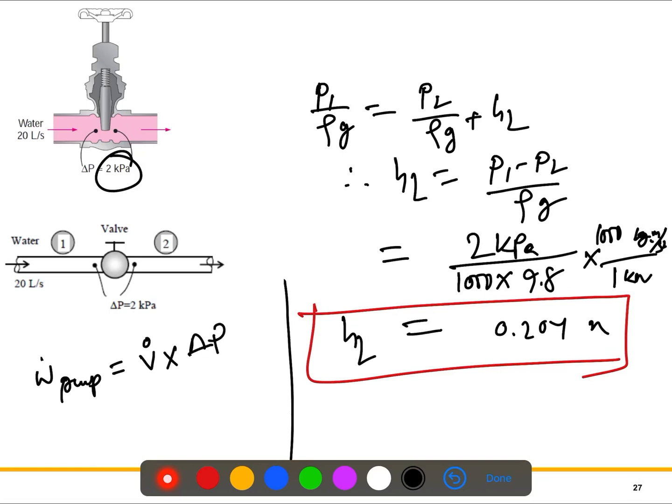The simple formula is the volume flow rate times the pressure difference. The volume flow rate is given here as 20 liters per second, so 20 liters per second we can convert into meters cubed per second. So it will be 0.02 m³/s. Delta P, that's the pressure difference, 2 kPa.